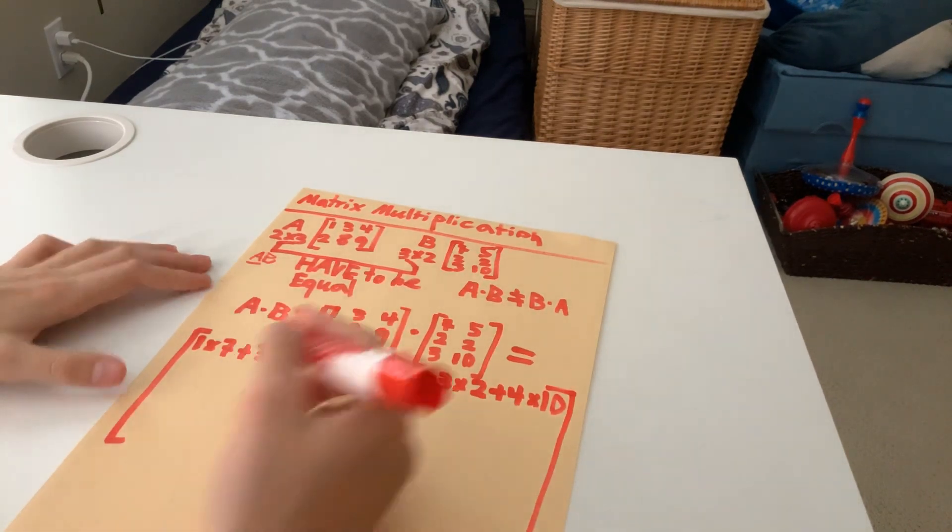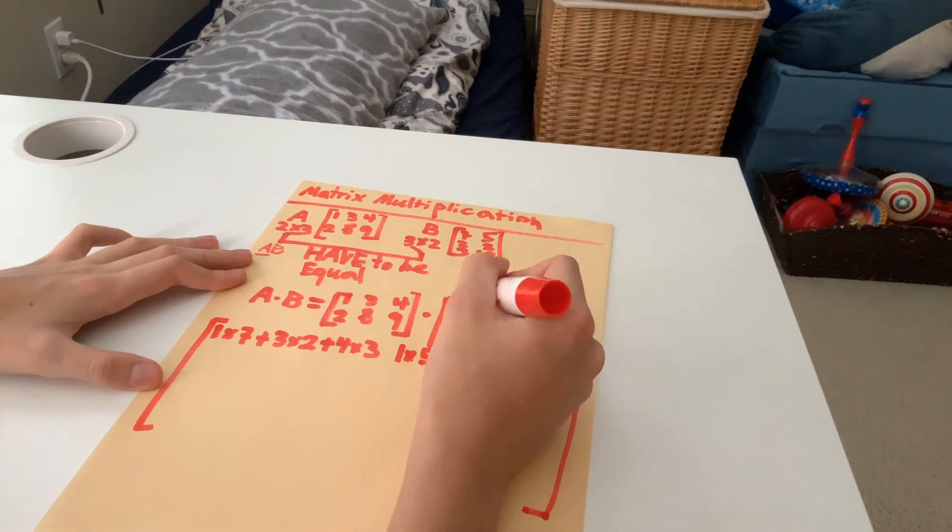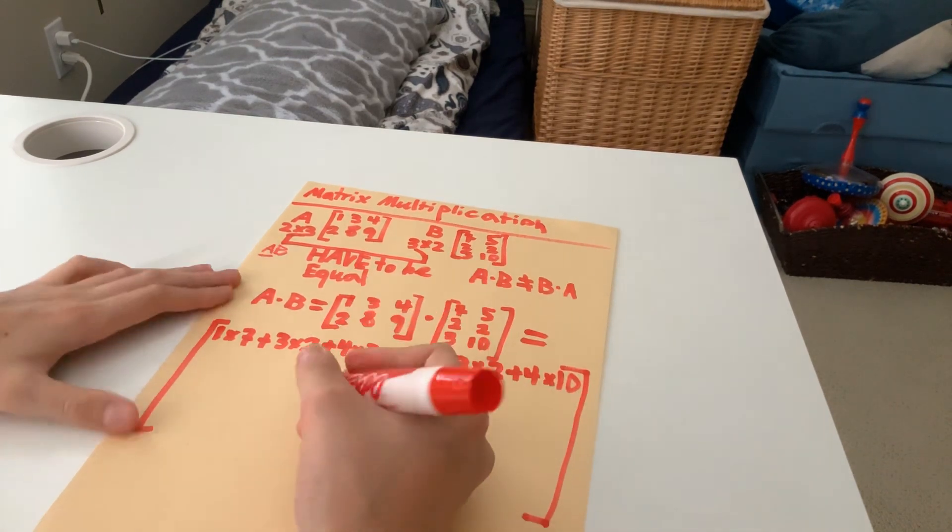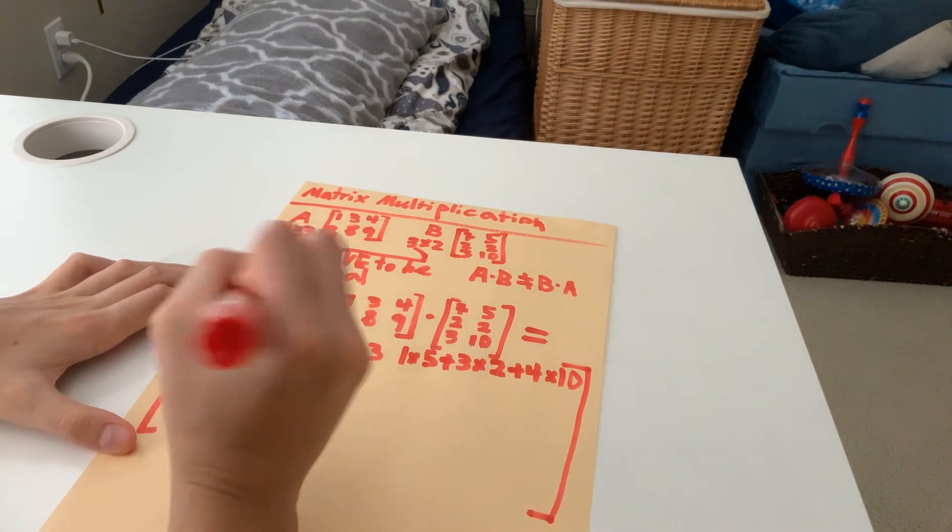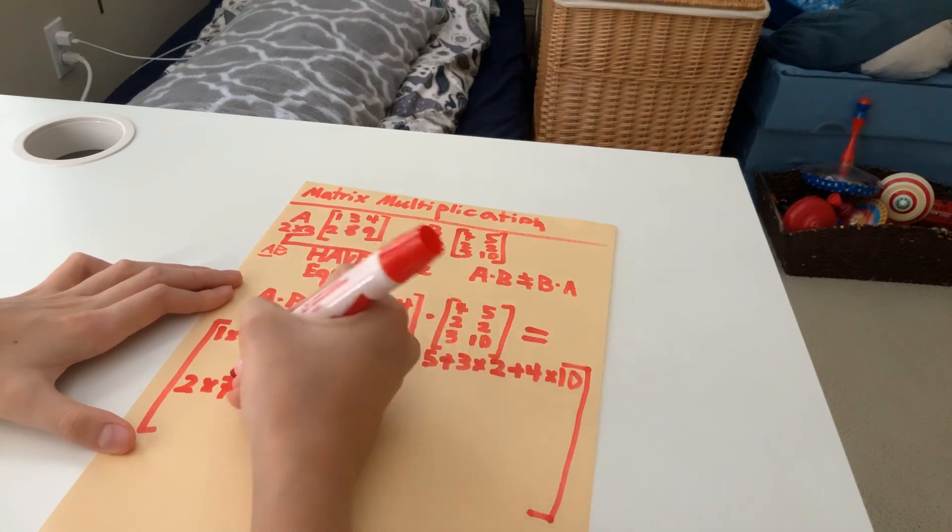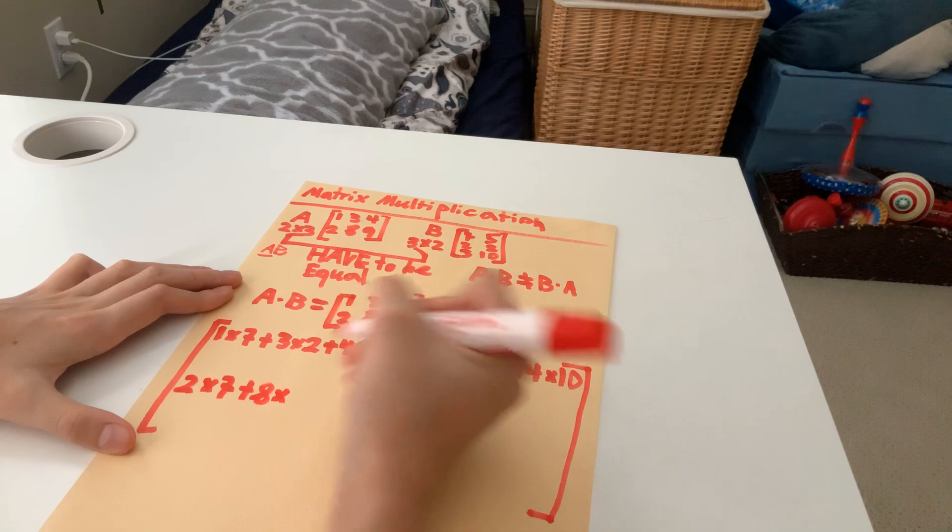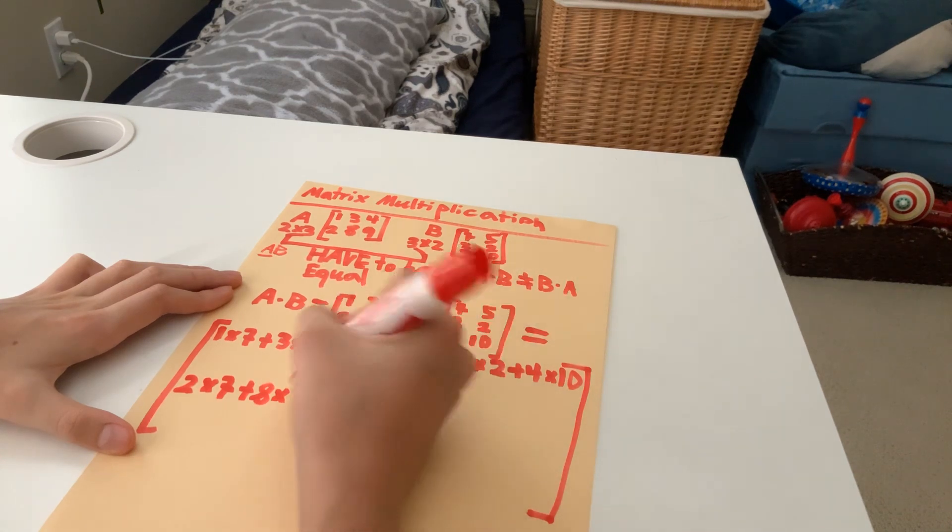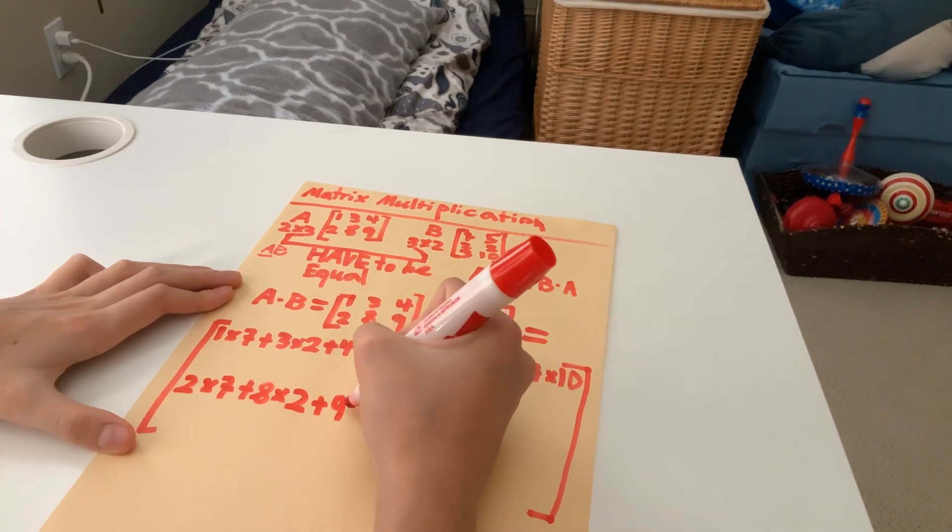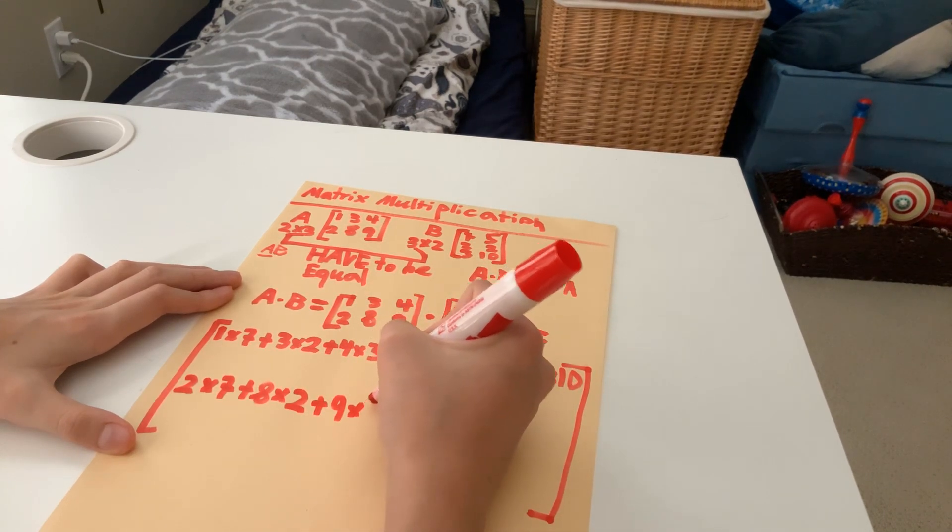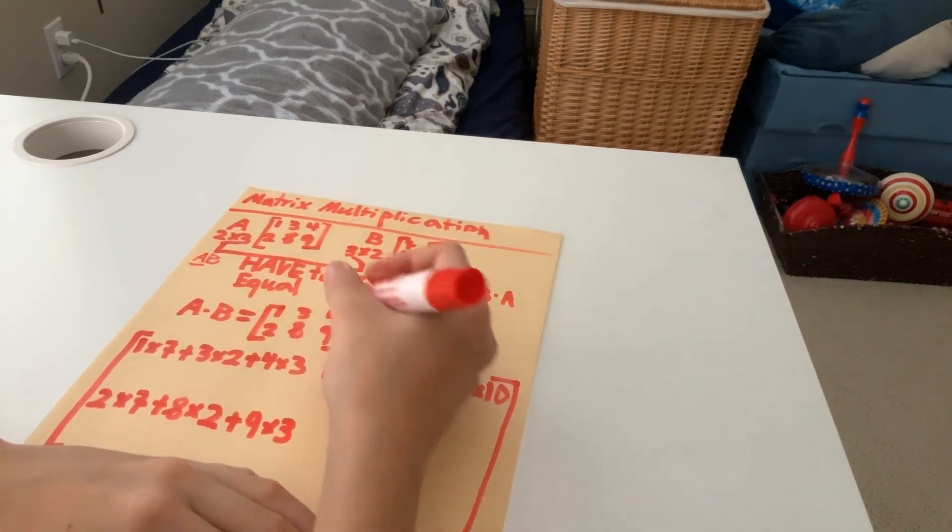So now, let's proceed to the second row. And we multiply by the first column. Hopefully, you get the pattern now. 2, yeah, I gave myself too much space. Multiplied by 7 plus 8 multiplied by 2. Finally, plus 9 multiplied by 3. There we go.